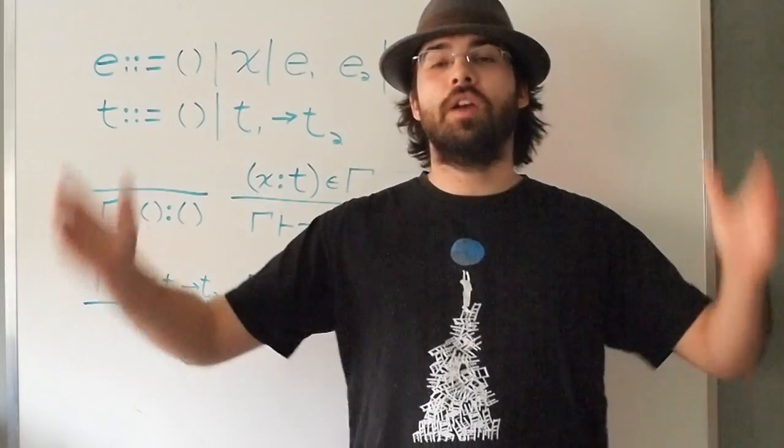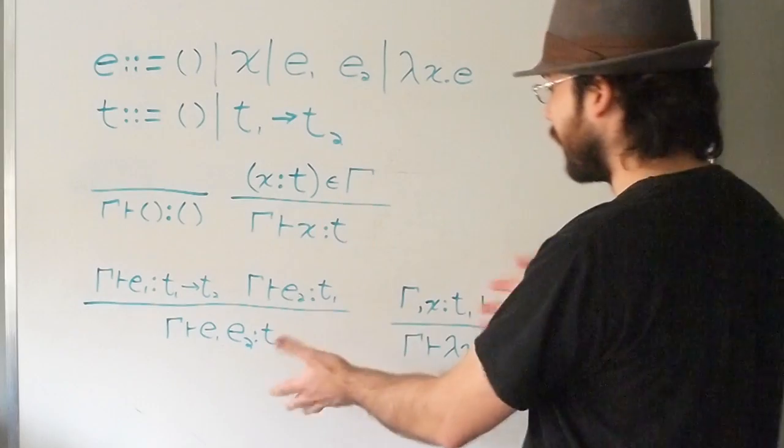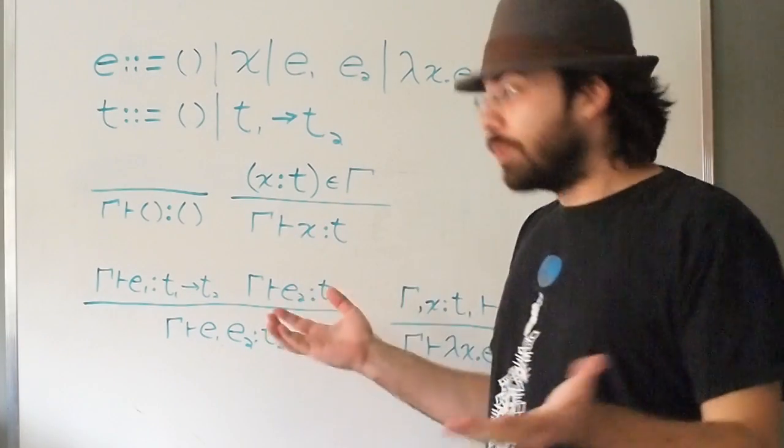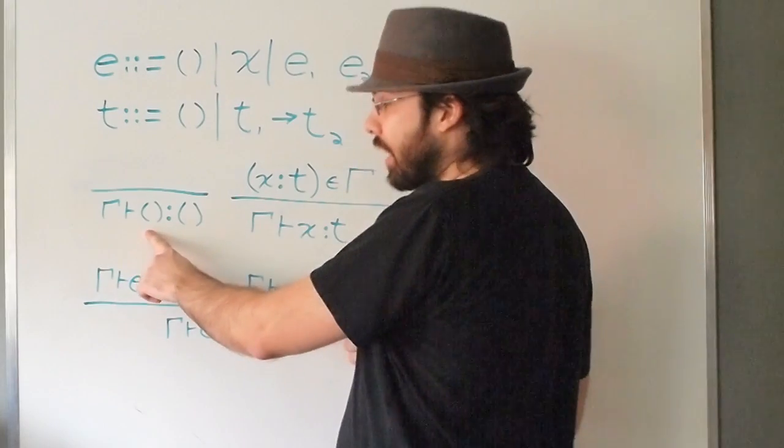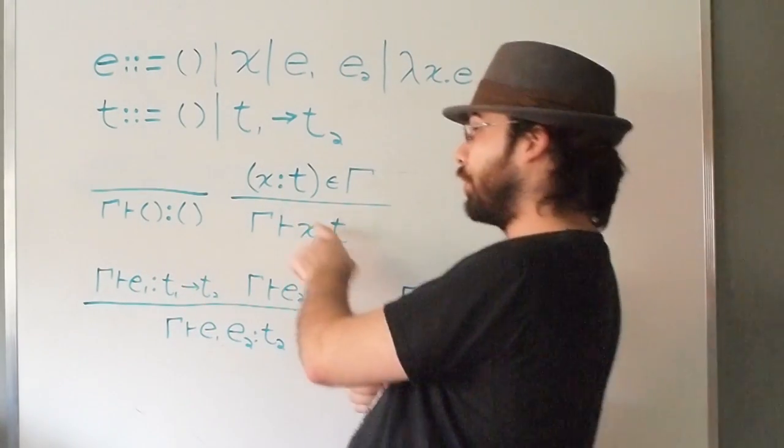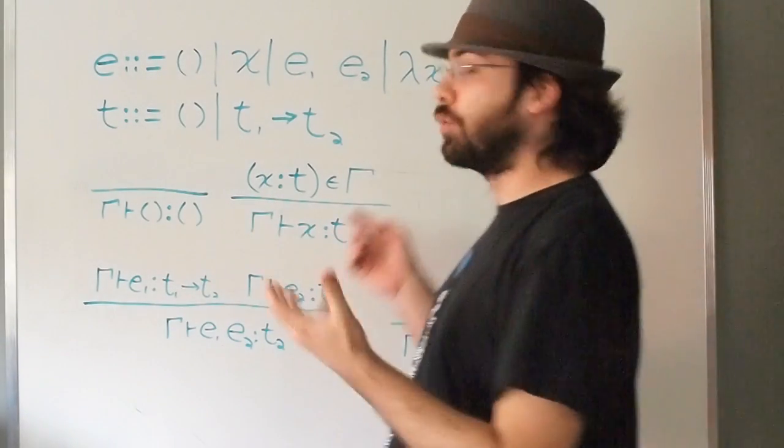For the lambda calculus, the typing rules are given like: unit has type unit, and variables have whichever type they are assigned in their context. I'm sure you know this already, but the context is a list of pairs of variables and their types.